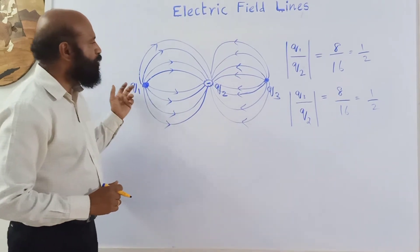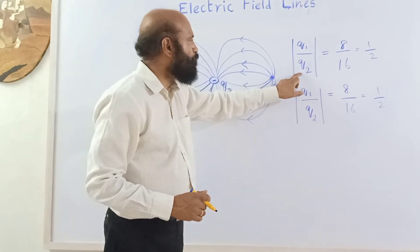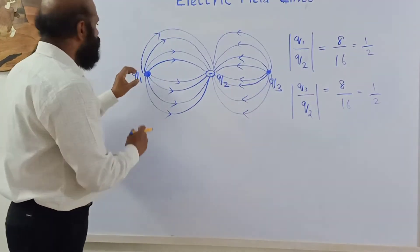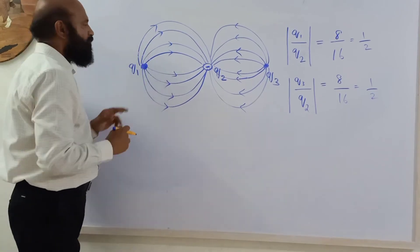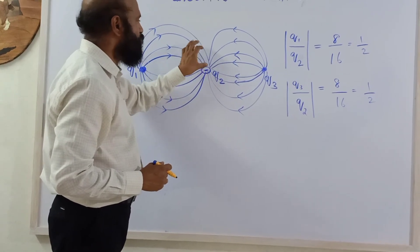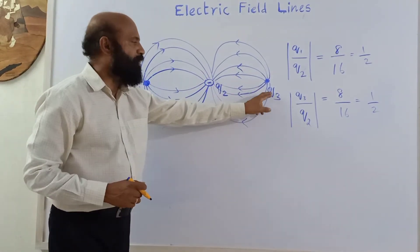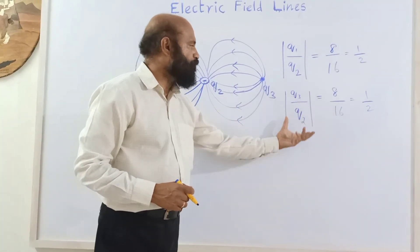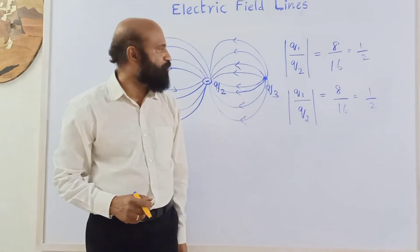Now we can make a comparison of the magnitude of the charges. The magnitude of Q1 divided by Q2 is equal to 8 by 16, because from Q1, 8 lines are starting and at Q2, 16 lines are ending. So 8 by 16 equals 1 by 2. Similarly, Q3 divided by Q2 — magnitude of that is 8 by 16, which is also equal to 1 by 2.